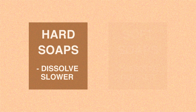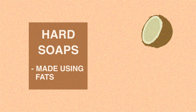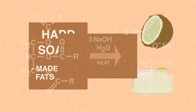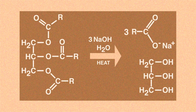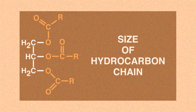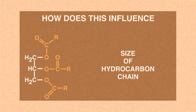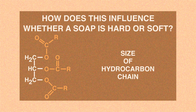Hard soaps are made by using certain fats like coconut oils, lard, or cocoa butter. Look at the equation shown now. The R group represents the size of a hydrocarbon chain. How do you think this might influence whether a soap is hard or soft? Pause the video and resume when ready.